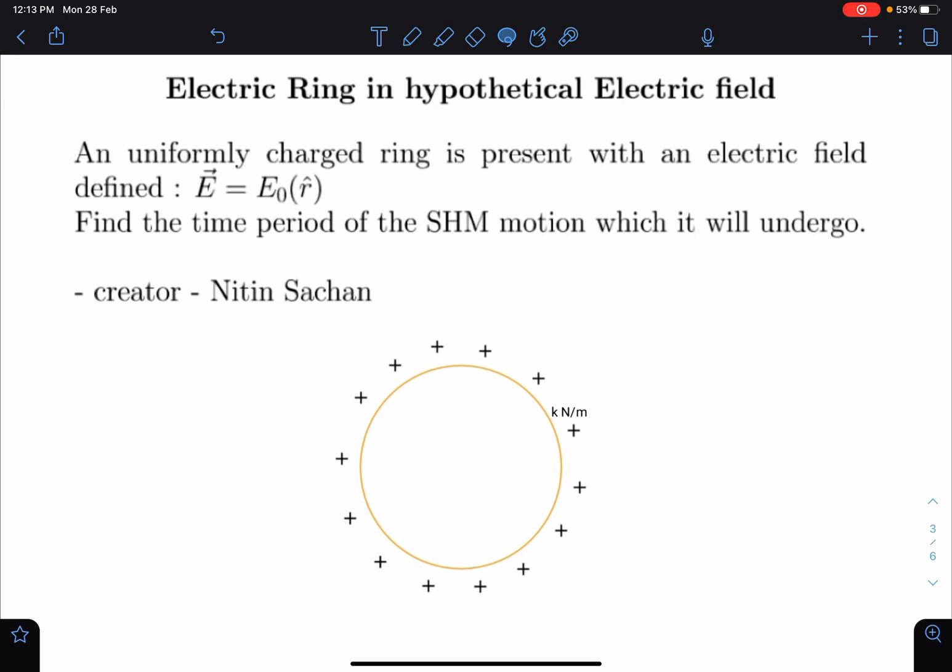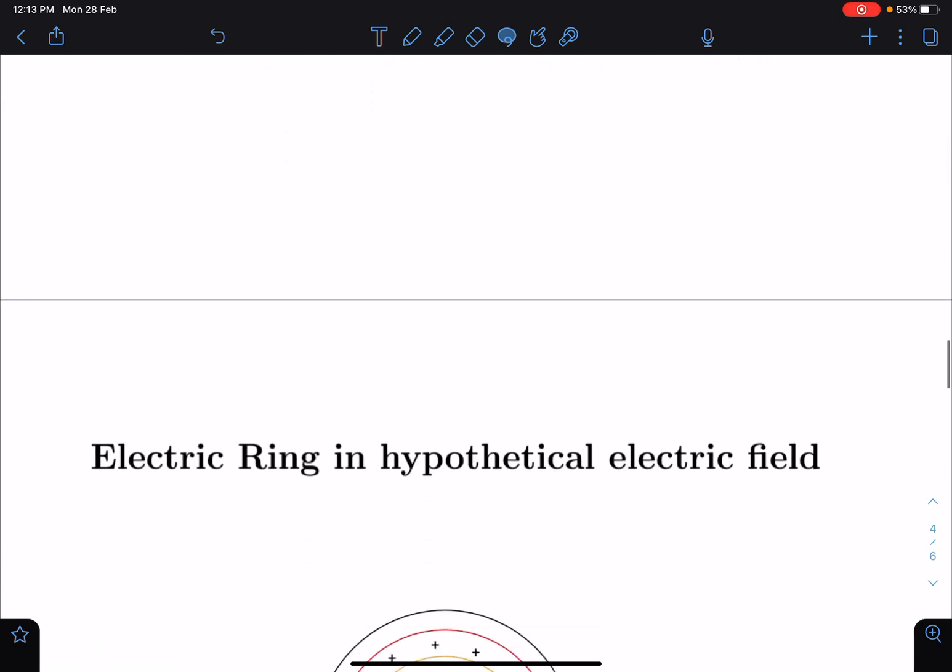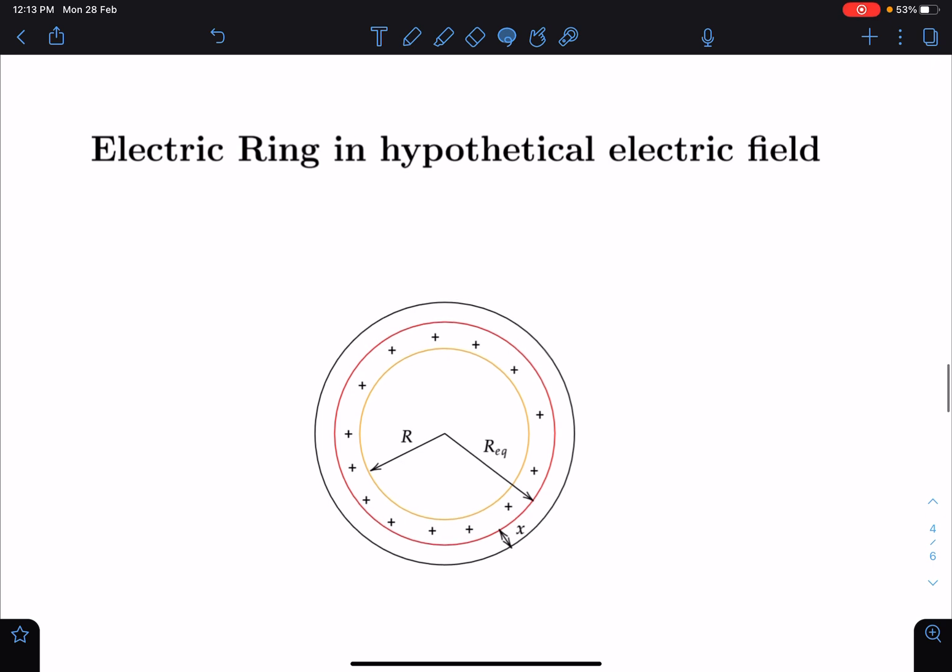Here you can see, initially this ring is in natural length of radius R, so 2πR is the natural length, and this yellow circle is the natural position when it is relaxed.